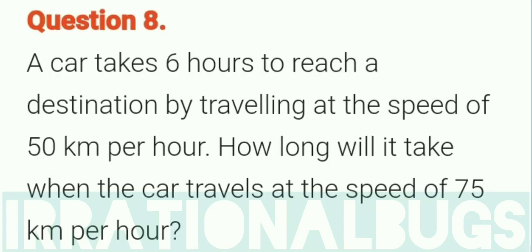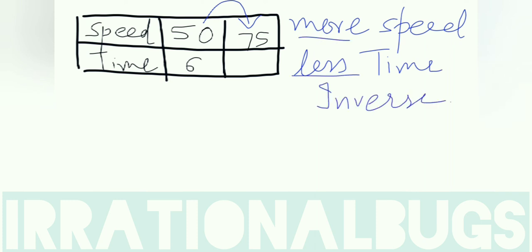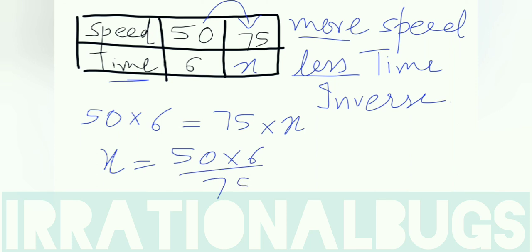Question number 8: A car takes 6 hours to reach a destination by traveling at the speed of 50 km per hour. How long will it take when the car travels at the speed of 75 km per hour? Quantities we need to take - one is speed given, one is time given. In this question, speed 50 to 75, that means speed increased. If we drive at higher speed, we will take less time. Again more speed, less time. This is an inverse variation case, that is multiplication. Now 50 into 6 is equals to 75 into x. x is equals to 50 into 6 upon 75. 25 two times 50, 25 three times 75. 2 into 2 is 4. Our answer is 4 hours.